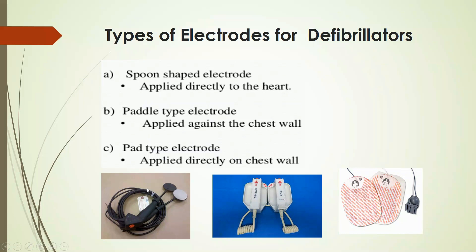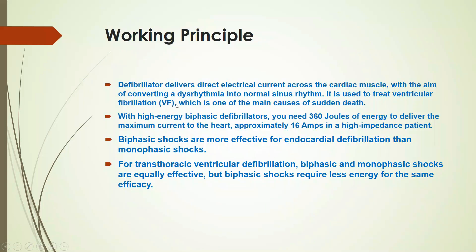The next topic is the types of electrodes for the defibrillator. There are three different types of paddles or electrodes used for defibrillation. The first one is the spoon-shaped electrode applied directly to the heart — this type is used for internal defibrillators. The second one is the paddle-type electrode used on the skin surface. The third one is the pad-type electrode used directly on the chest wall.